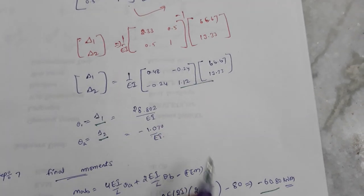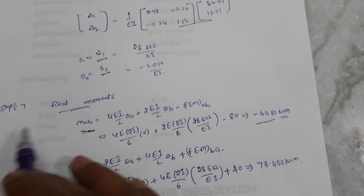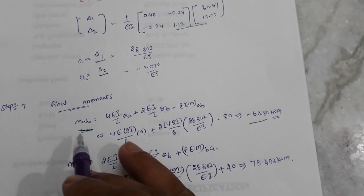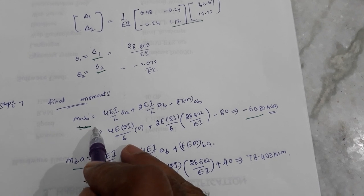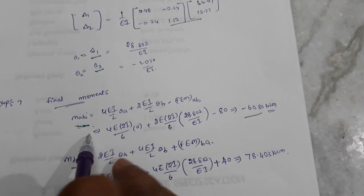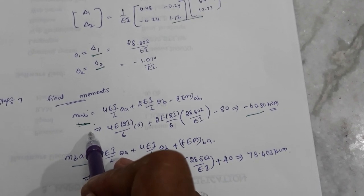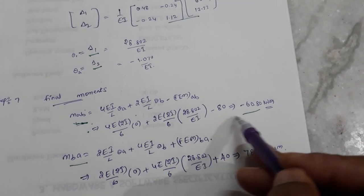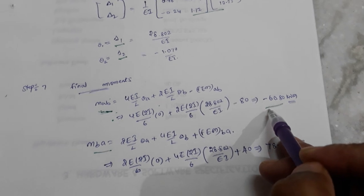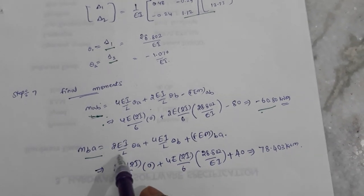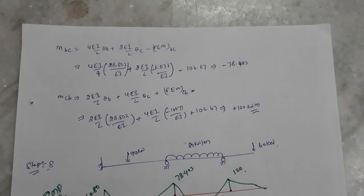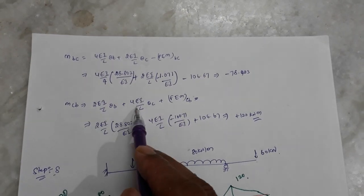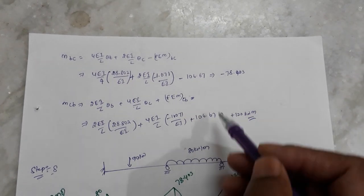Using the angular displacements, we find the final moments by substituting the displacements back into the slope deflection equations with the fixed end moment conditions. This gives us the final member-end moments: MAB, MBA, MBC, and MCB.